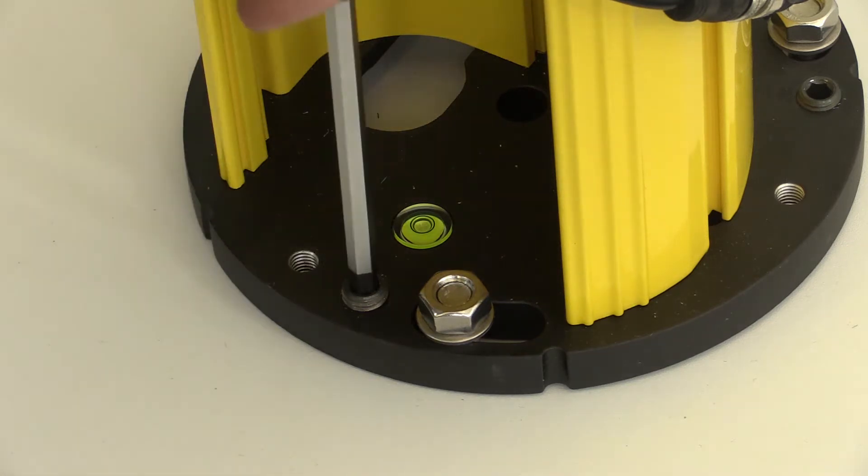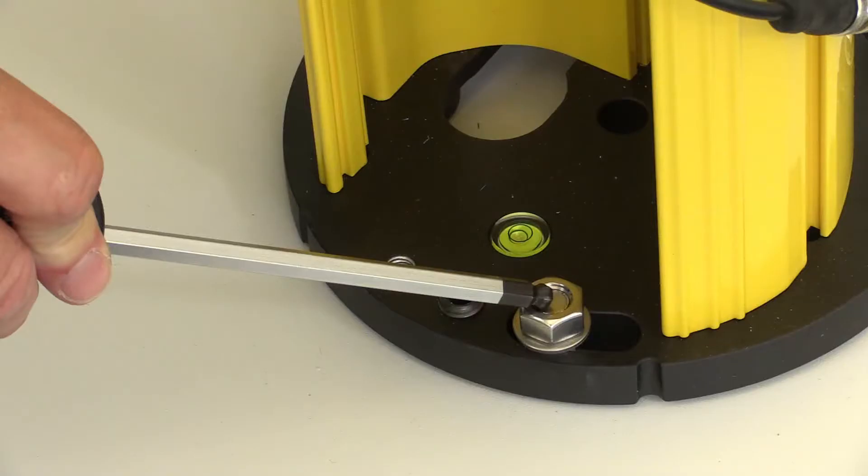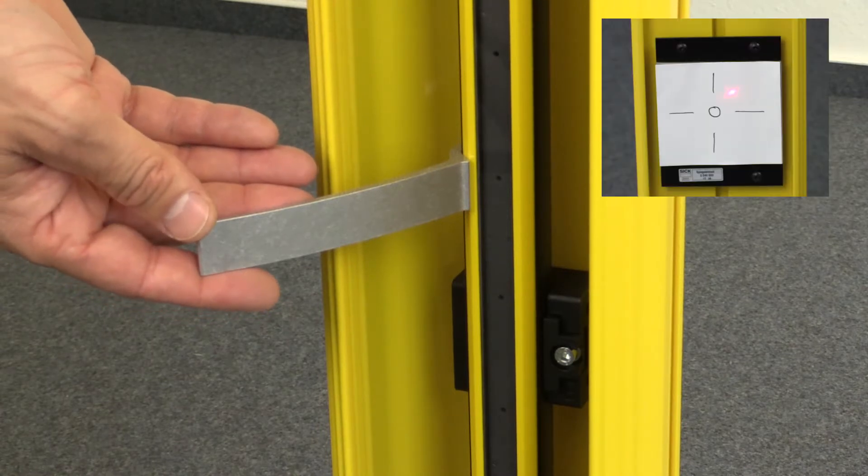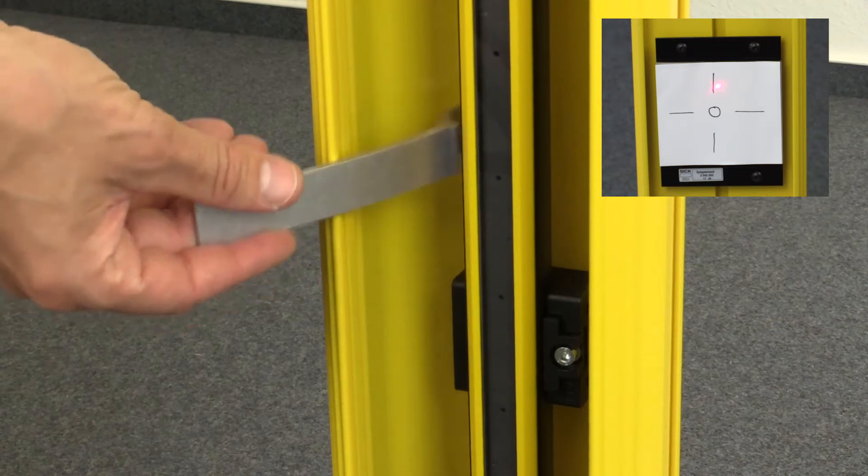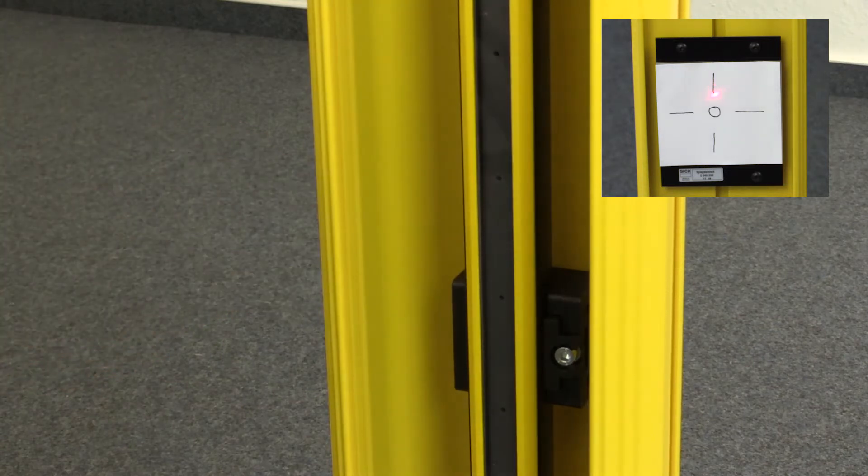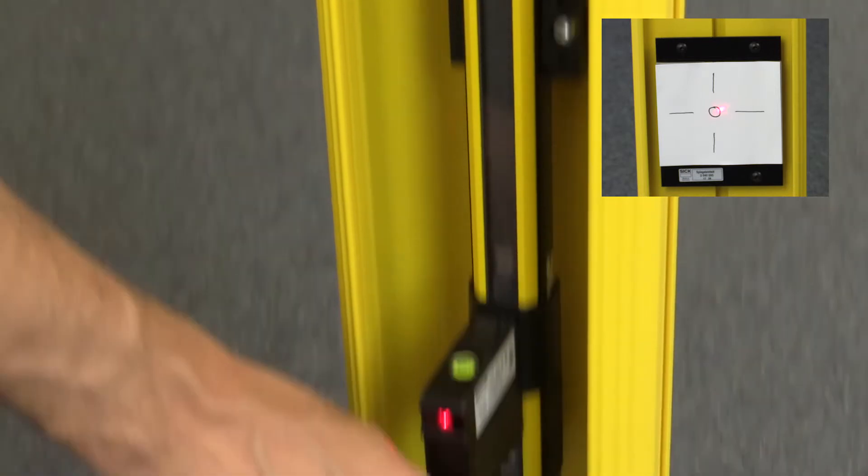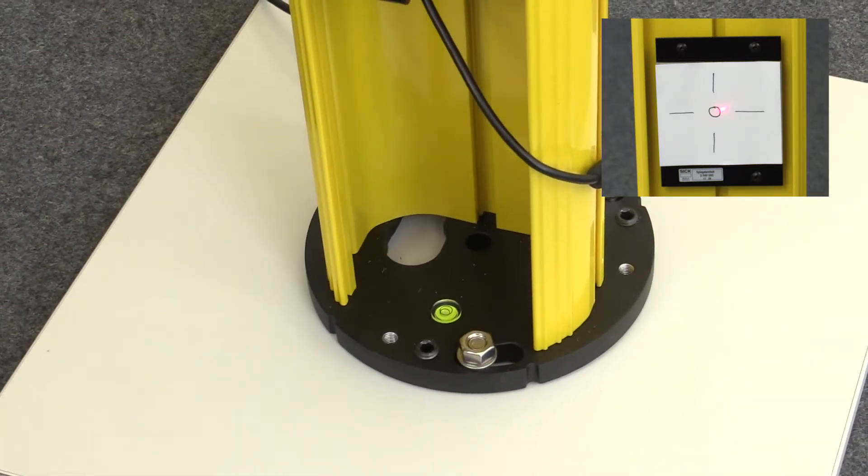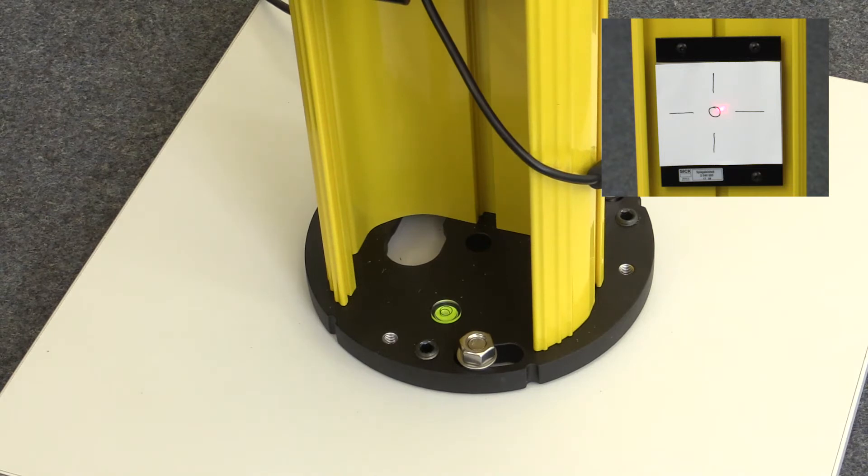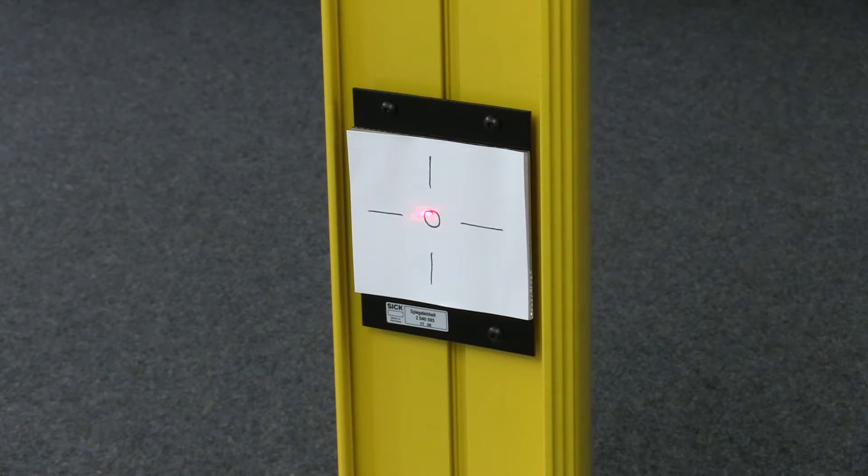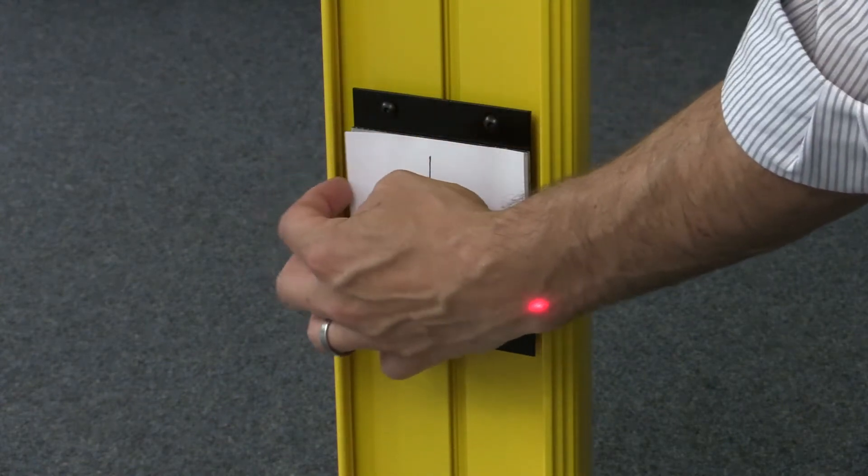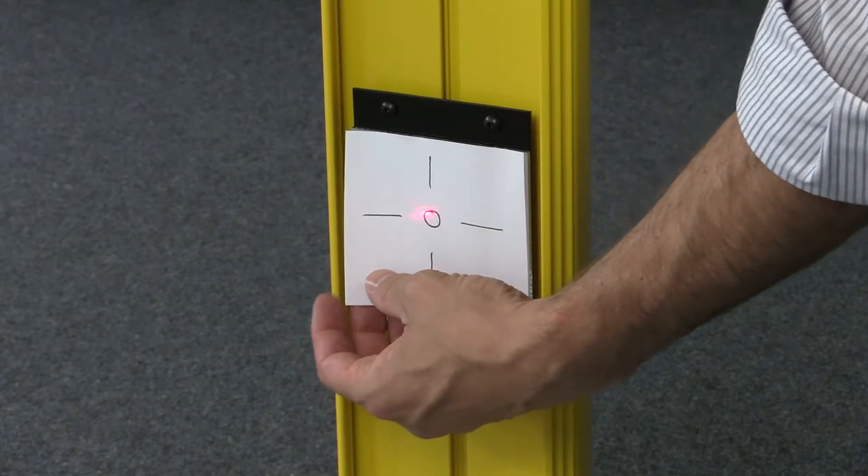Level the column and then fix the column on the floor. Turn the sender by using the alignment tool and make a fine adjustment for the horizontal positioning of the laser beam, until the laser beam hits the mirror of the mirror column. You have already seen that I have used a self-made target for helping to find the position of the laser beam.